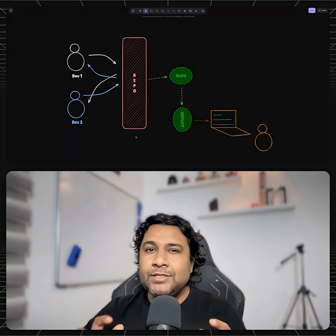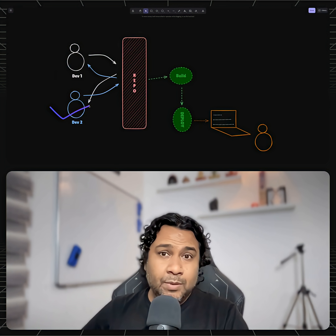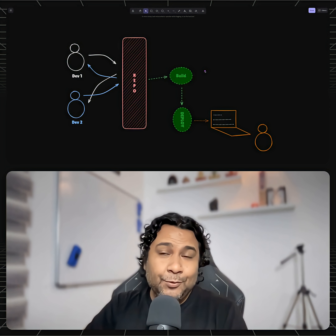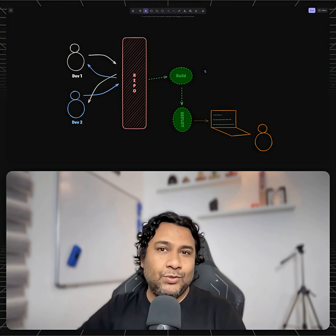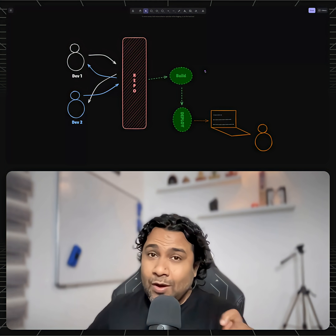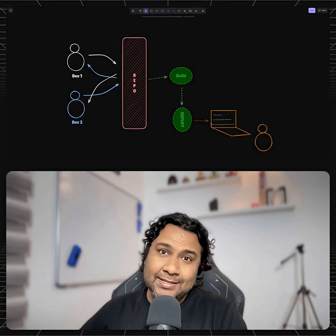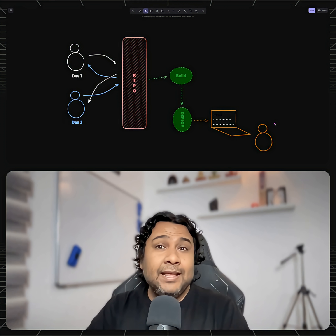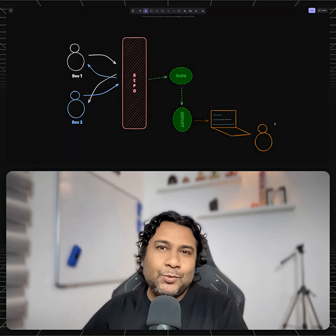They freeze your dependency trees so that you, your team members, your CI server, even the future you — all run the same code. And as you all run the same code, your end customers see exactly what they are supposed to see.